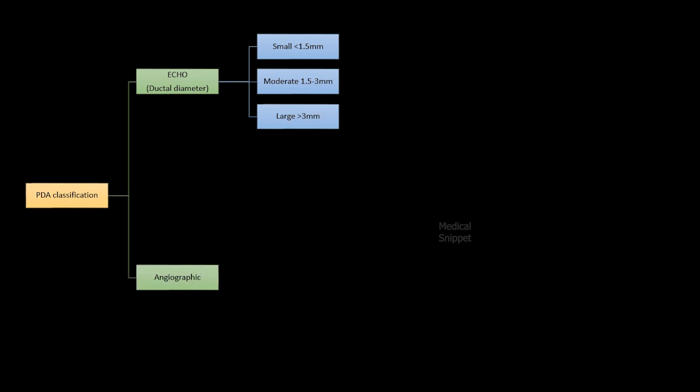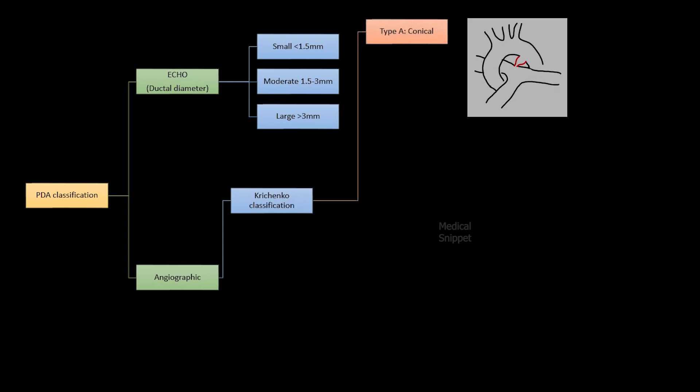Angiographically, PDA can be classified according to its configuration and size. Krichenko classified PDA according to angiogram appearance. Type A is a conical PDA with well-defined aortic ampulla and constriction near the pulmonary artery end.